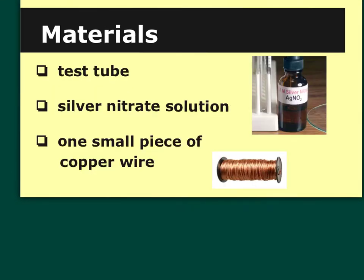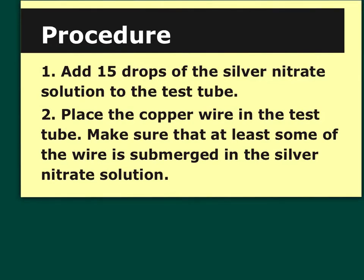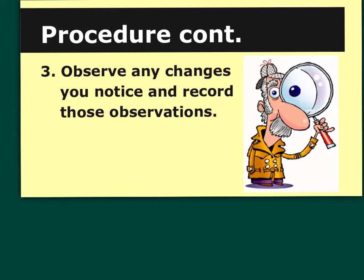For the single replacement reaction lab, the materials you'll need are a test tube, silver nitrate solution (formula AgNO₃ — that nitrate should be familiar by now), and a small piece of copper wire. In the procedure, you add some silver nitrate to a test tube, put the copper wire down into the solution, observe any changes, and record your observations. At the end of the lab, we'll write the chemical formula for this reaction.